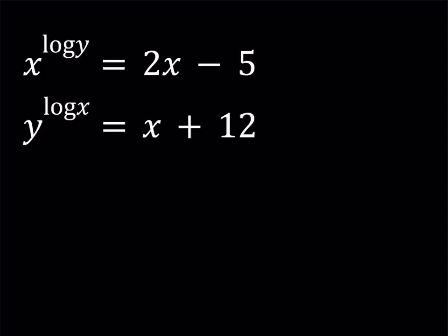We have this system and when you look at each piece individually it kind of looks a little confusing, right? We have x to the power of something and then it's equal to 2x minus 5. It's not a standard equation if you look at the first one or the second one — in other words, it's not a standard system. The solution method is going to be really nice though, in my opinion.